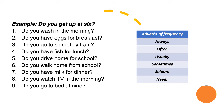Number one: Do you wash in the morning? Number two: Do you have eggs for breakfast? Number three: Do you go to school by train? Number four: Do you have fish for lunch? Number five: Do you drive home from school?